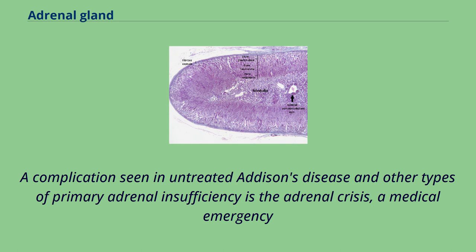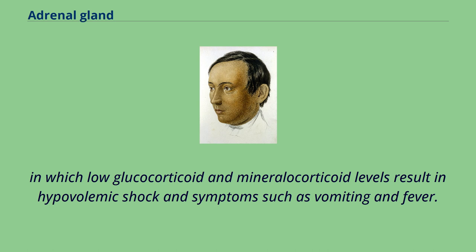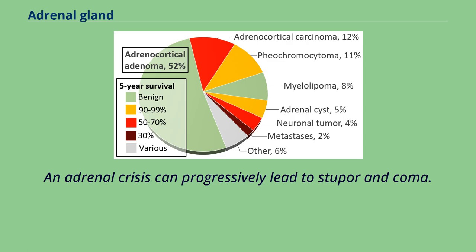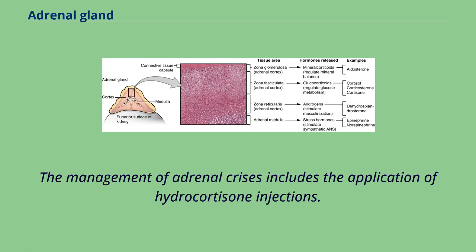A complication seen in untreated Addison's disease and other types of primary adrenal insufficiency is the adrenal crisis, a medical emergency in which low glucocorticoid and mineralocorticoid levels result in hypovolemic shock and symptoms such as vomiting and fever. An adrenal crisis can progressively lead to stupor and coma. The management of adrenal crises includes the application of hydrocortisone injections.